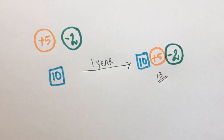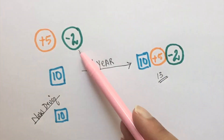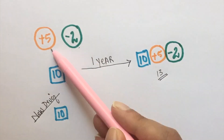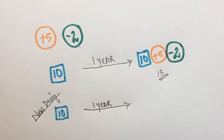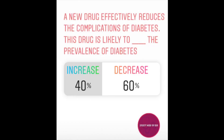But if we have a drug which decreases the complications of diabetes, it prevents the death but does not prevent the number of new cases. So, 1 year later, we will have 10 plus 5 plus 2, that is 17 cases overall. So, this new drug will increase the prevalence of diabetes.